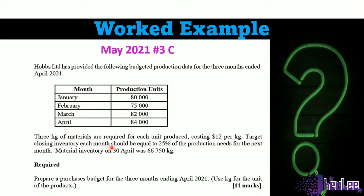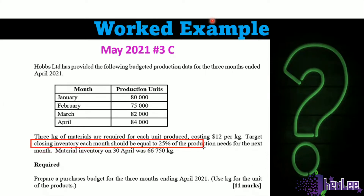Target closing inventory each month should be equal to 25% of production needs for the next month. Bear in mind that the closing inventory for a period becomes the opening inventory for the next period. The closing inventory for each month is 25% of production needs for the next month.